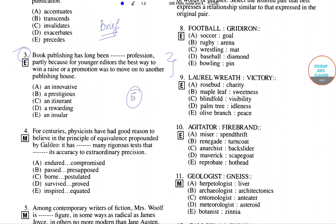Let's get started with question number 3. The question says: 'Book publishing has long been ___ profession, partly because for younger editors the best way to win a raise or a promotion was to move on to another publishing house.' This sentence deals with book publishing, editors, and the way they advance in their careers. We have been provided with five options: innovative, prestigious, itinerant, rewarding, and insular.